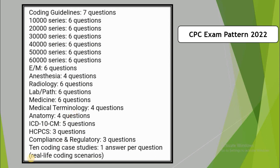HCPCS: 3 questions. Compliance and regulatory: 3 questions. Then there are 10 coding case studies with one answer per question — real-life coding scenarios will be included. This is the updated structure of the AAPC CPC exam with chapter-wise deviation, and you can study and prepare accordingly.